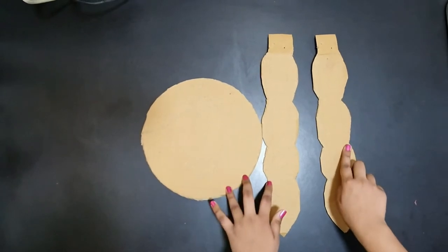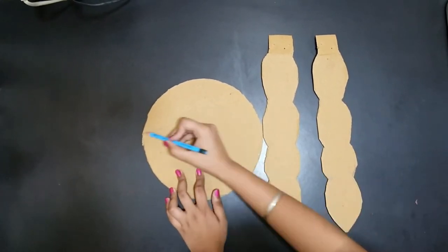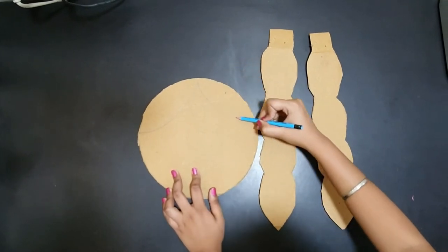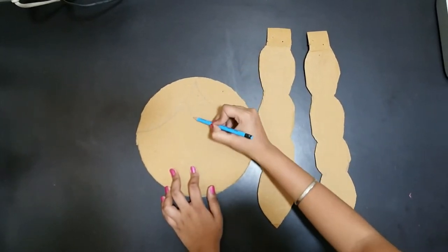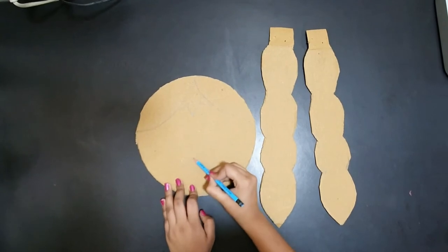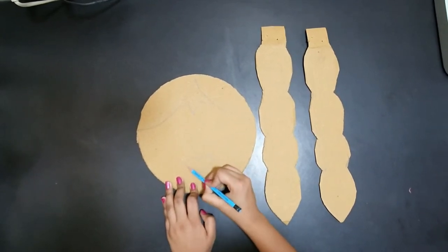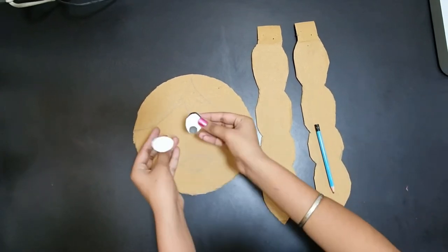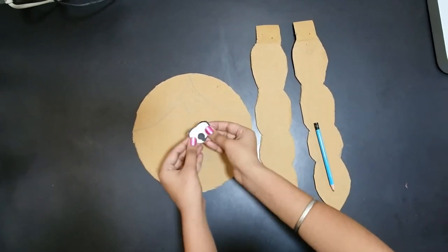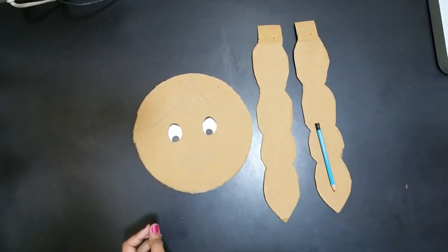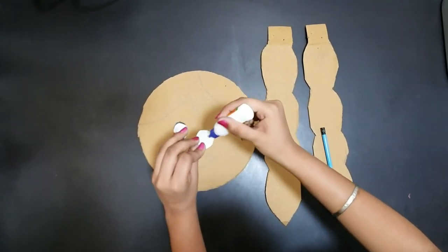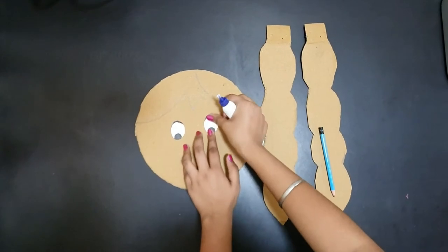Now, I have three cutouts ready. First, we will prepare the face. We will make hair, lips. I have two eye cutouts ready. We will stick it. I will do them in a minute.